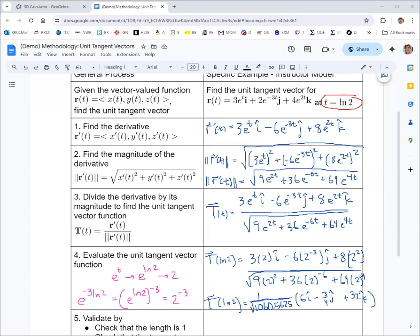So to validate, we want to make sure that we have a unit tangent vector. So to make sure that it's a unit vector at all, you've got to make sure that the length is one. And so that's one validation technique. Beyond knowing that it's a unit vector, you want to make sure it's the tangent vector to the curve. And to do that, you need to graph it and make sure it looks like it's tangent to the curve. So we'll check both of those things.